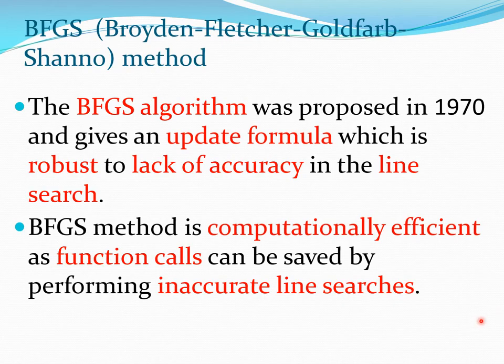The full form of the BFGS method is the Broyden-Fletcher-Goldfarb-Shanno method. These are the four researchers who came up with this method. This algorithm was proposed in 1970 and essentially gives us an update formula for the Hessian matrix which is robust to the fact that line searches may not be very precise. In this method you can use a somewhat imprecise line search, which is one of its strengths.